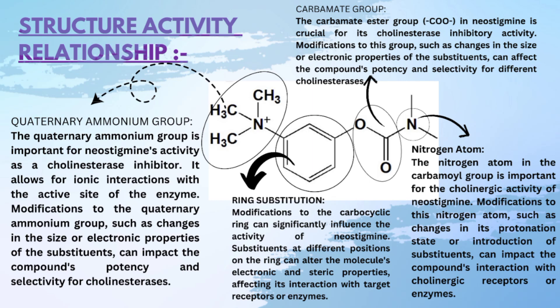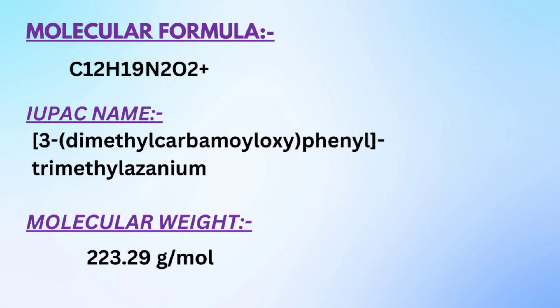The nitrogen atom in the carbonyl group is important for the cholinergic activity of Neostigmine. Modification to this nitrogen atom, such as change in its protonation state or introduction of substituents, can impact the compound's interaction with cholinergic receptors or enzymes. Fourth is the carbamate group. The carbamate ester group in Neostigmine is crucial for its cholinesterase inhibitor activity. Modifications to this group, such as change in the size or electronic properties of a substituent, can affect the compound's potency and selectivity for different cholinesterases. The molecular formula of Neostigmine is C12H19N2O2.